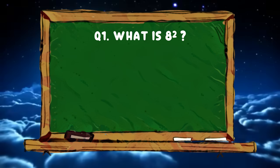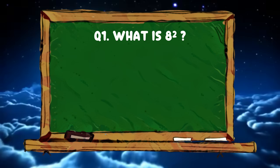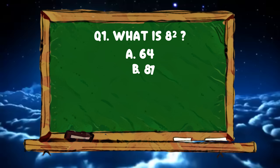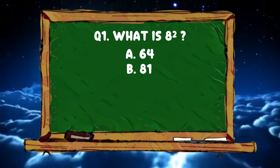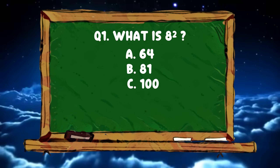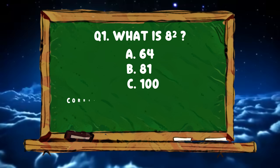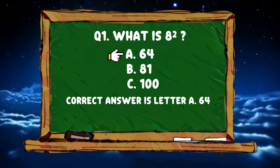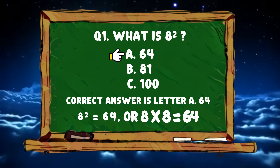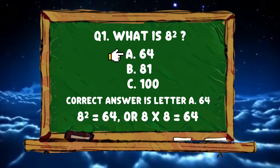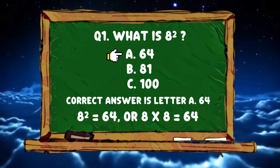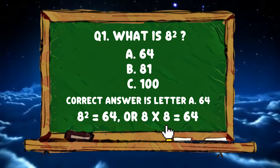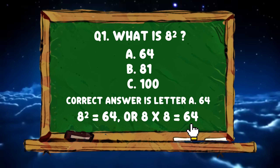Question number 2: What is 8 squared? Letter A 64, B 81, or letter C 100? The correct answer is letter A 64. 8 squared is equals to 64.